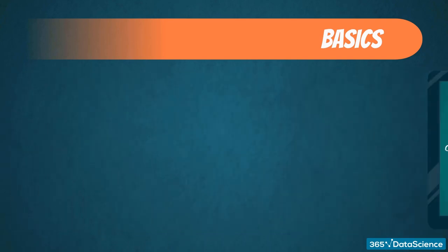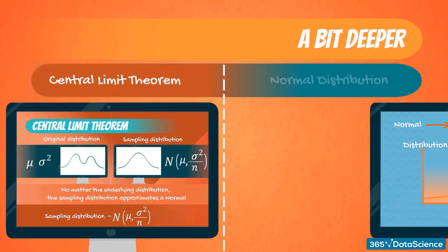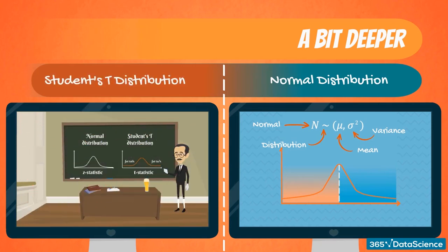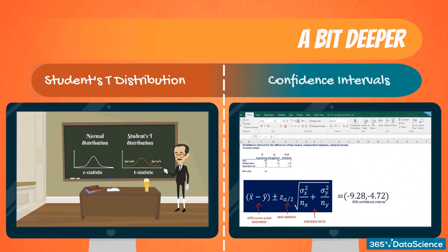Once we have covered the introductory part of the course, we will be ready to learn about the central limit theorem, normal distribution, Student's t-distribution, and how to create, use, and interpret confidence intervals. These are some of the indispensable tools you need when making business decisions relying on data. You must be able to make predictions under uncertainty, and that's precisely what you can do after completing this part of the course.